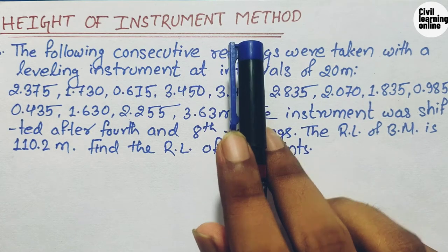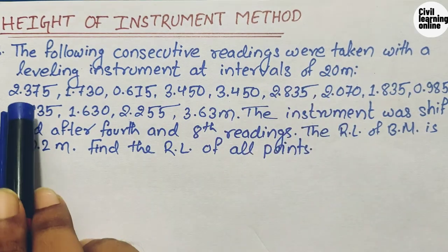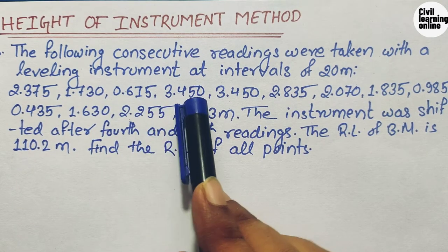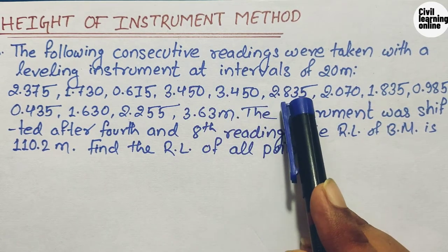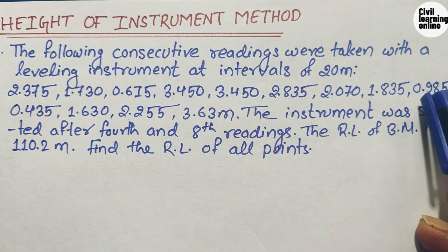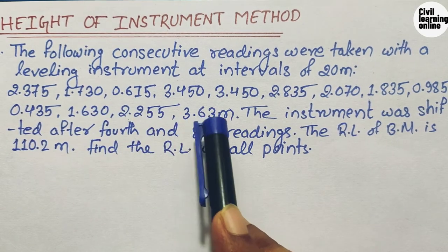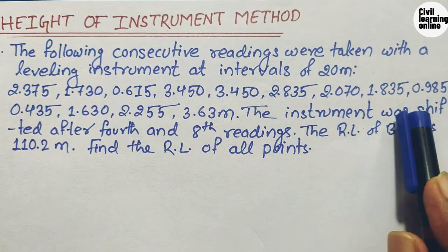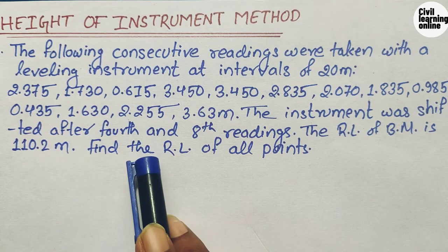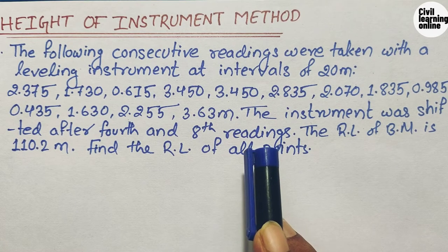If you want to know what is line of collimation, check the description — I will provide the definition there. The question is: the following consecutive readings were taken with a leveling instrument at intervals of 20 meters. The readings are 2.375, 1.730, 0.615, 3.450, 3.450, 2.835, 2.070, 1.835, 0.985, 0.435, 1.630, 2.255, and 3.63 meters. The instrument was shifted after the fourth and eighth readings, and the RL of the benchmark is 110.2 meters.